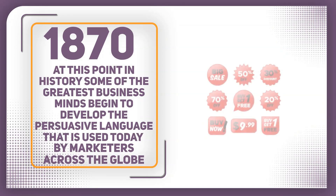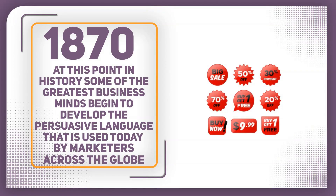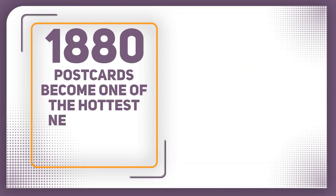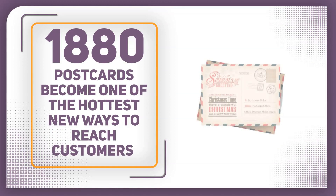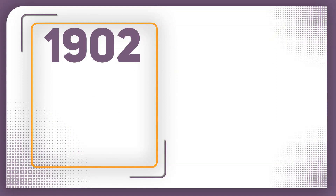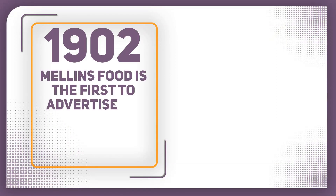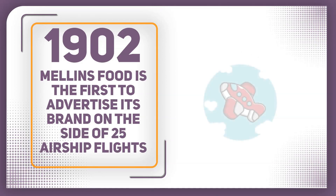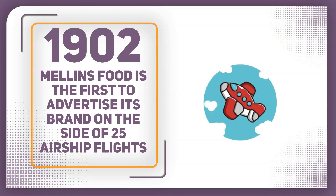No longer were these adverts simply informative — they were now focused around the value that would be added. In 1880, postcards became one of the hottest new ways to reach customers. Direct advertising began to become prominent, and this was really the very first seed of the overcrowded email inbox we see today. In 1902, Mellon's Food was the first to advertise its brand on the side of 25 airship flights, becoming the first brand in history to take this approach. It's not unusual today to see adverts on planes, trains, and the side of buses, but back then this was a new and exciting way of grabbing customers' attention.